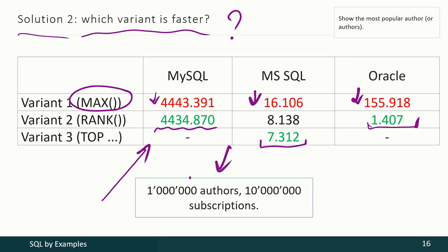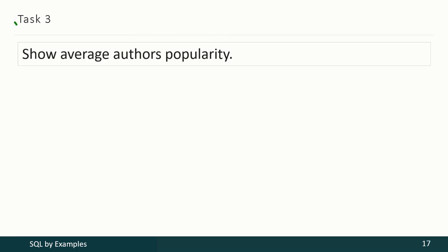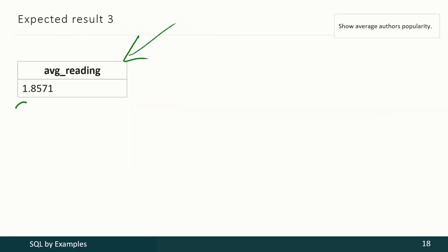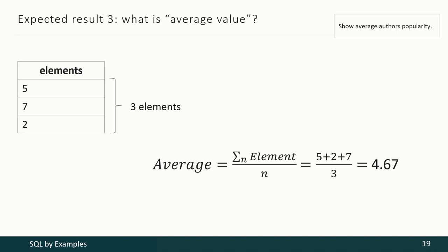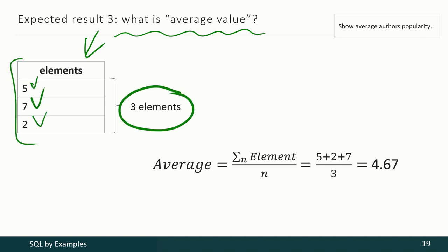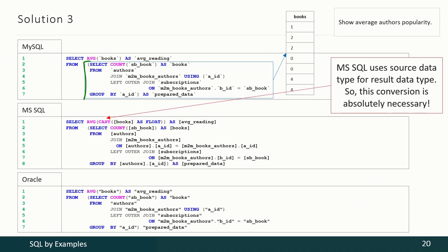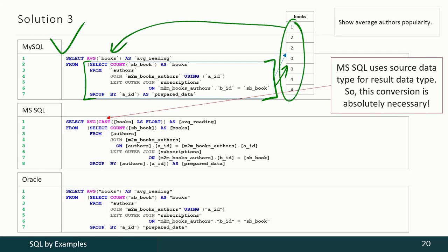Now let's calculate average author popularity — the average value of how many books of each author were taken by subscribers. As a reminder: to calculate an average, sum the values and divide by the quantity of elements. First we calculate how many books of each author were taken by subscribers, then pass this information to the AVG function to get the final result. For Oracle the solution is exactly the same, but for Microsoft SQL Server we have to convert integers into floats, otherwise the result will also be an integer, which is incorrect.